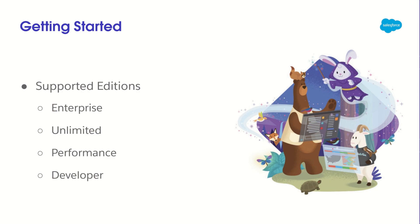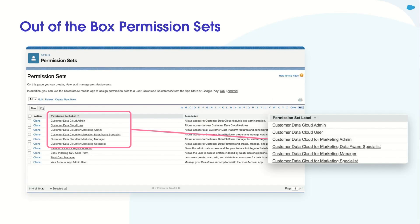With that, I'll pass it over to Kunal to talk through getting started with Data Cloud. Thank you, Will, for an amazing overview. Now let's get started. Before you provision Data Cloud, there are certain things to know, like what editions are currently supported. We currently support four editions — Enterprise, Unlimited, Performance, and Developer editions for Data Cloud. For all of these editions, you get six out-of-the-box permission sets that we create for you, covering the two versions of Data Cloud that currently exist.